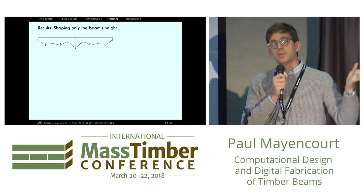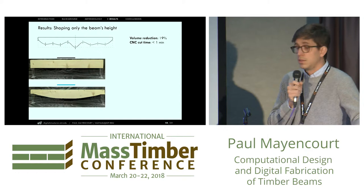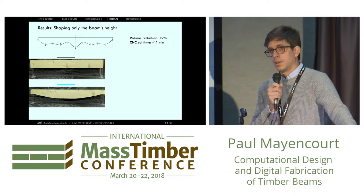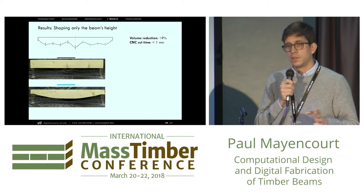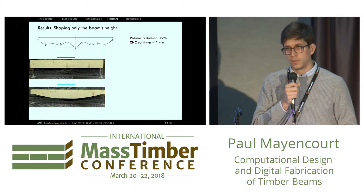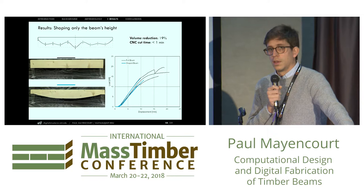The first result when I was starting my research was looking at what happens if I only shape a structural beam by changing its height along the length, because it was easier. You can actually remove 20% of the material in that case with a simple cut that takes less than a minute on a small beam. I was in the lab, so it was a very small machine, but you can imagine doing the same cuts on bigger elements. You can remove 20% of the weight very easily, and after load testing, it shows that it works.